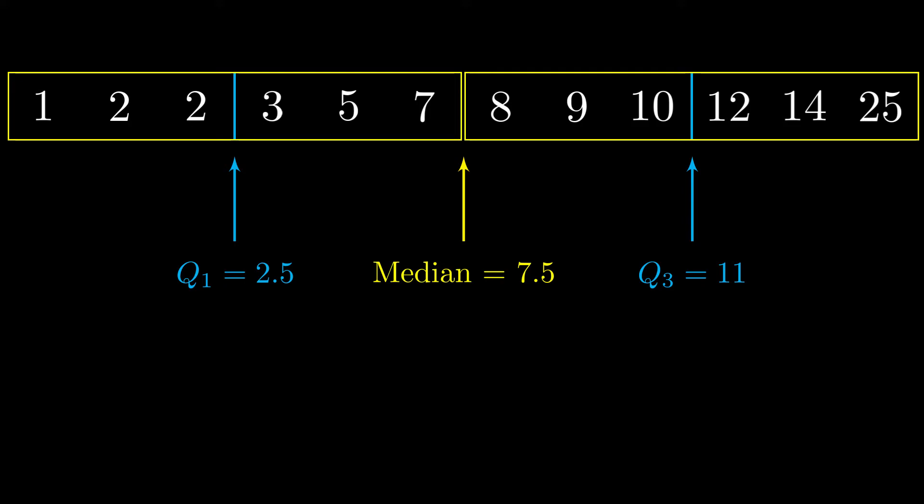So our lower quartile is 2.5. Our upper quartile is 11. The difference between them is the interquartile range. That's 11 minus 2.5, which is 8.5.